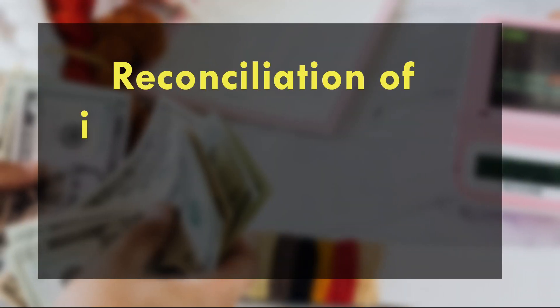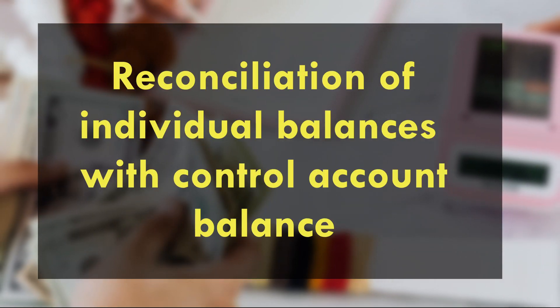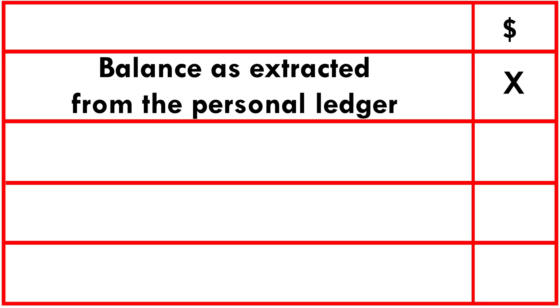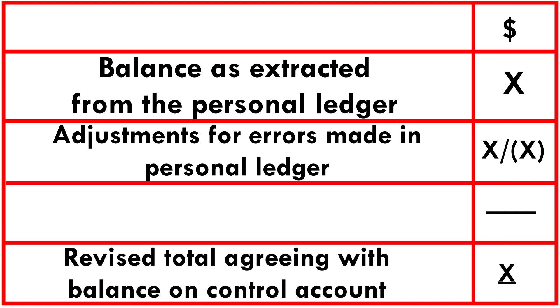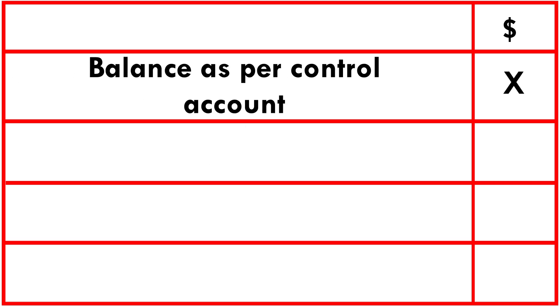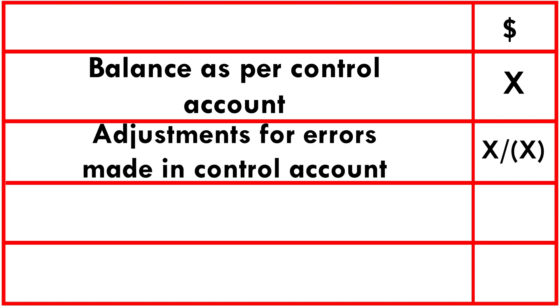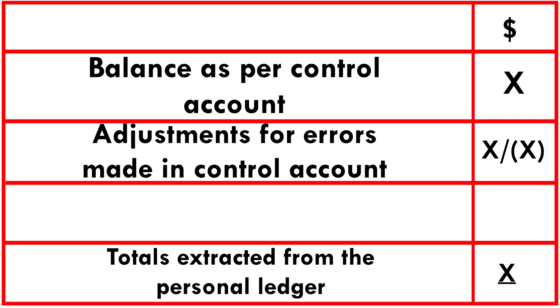Reconciliation of individual balances with the control account balance is done as follows: start with the balance from the personal ledger and make adjustments for all errors made in the personal ledger — the result is a revised total which should agree with the control account balance. Alternatively, start with the balance as per the control account, make adjustments for all errors made in the control account, and this will give you the totals extracted from the personal ledger.